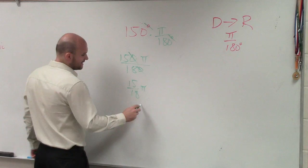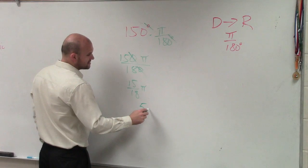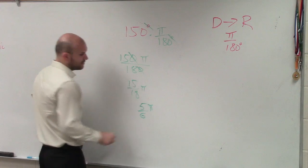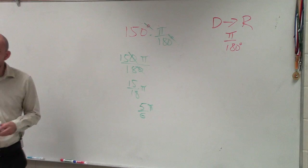you can divide out a 3. 3 goes into 15, 5 times. 3 goes into 18, 6 times. So we write it as 5 pi over 6, and that'd be your answer.